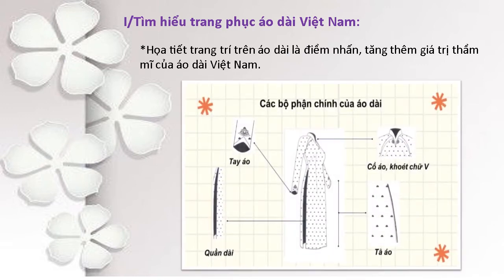Bây giờ chúng ta cùng quan sát hình ảnh các bộ phận chính của áo dài. Chúng ta có tay áo, có cổ áo, có thể khoét chữ V, chữ U, hoặc là cổ thuyền theo dạng cách tân, tùy theo ý thích của mình. Ngoài ra chúng ta còn có tà áo, tà trước và tà sau. Đi kèm với áo dài, chúng ta sẽ có thêm quần — đó là những bộ phận chính của áo dài.